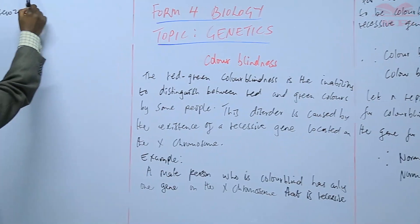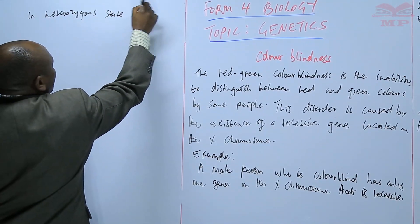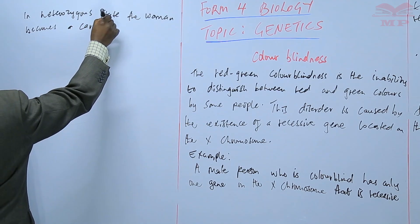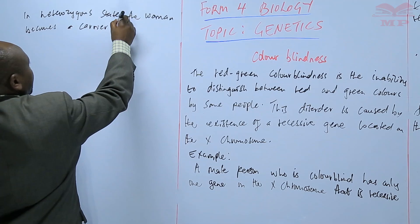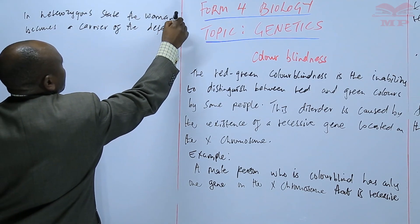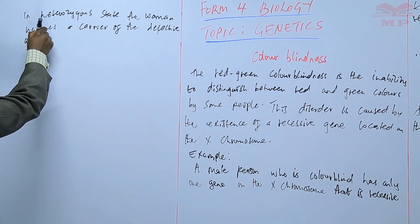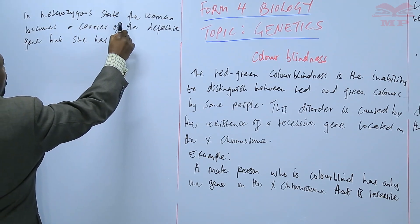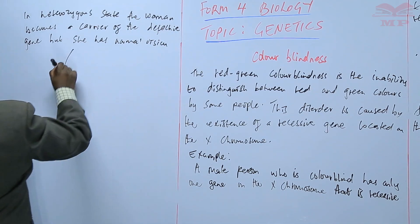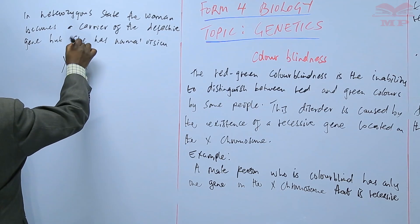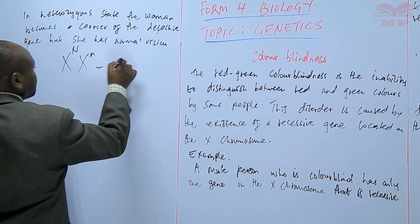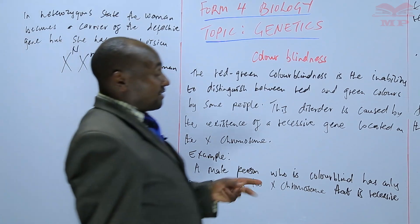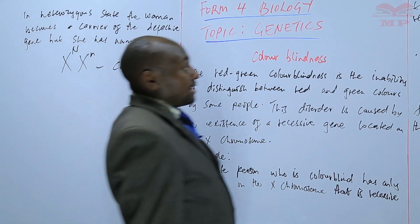In a heterozygous state, the woman becomes a carrier — a carrier of the defective gene. So this is a carrier woman, written as X(N)X(n). Basically, those are all the genotypes we can have to show whether a person is a colorblind male, colorblind female, normal male, or carrier female.